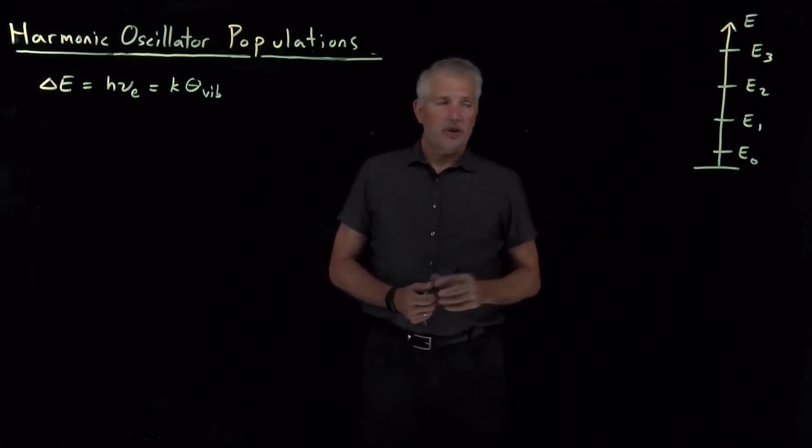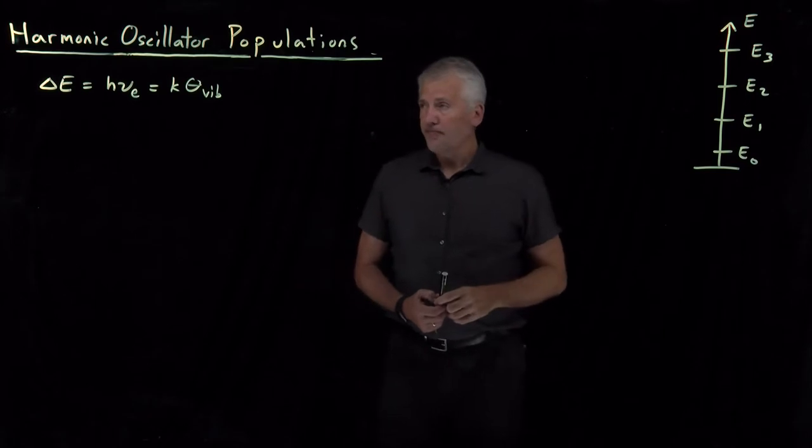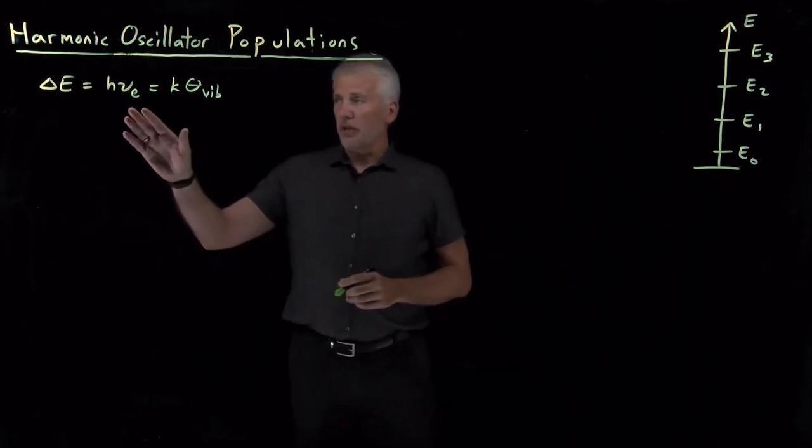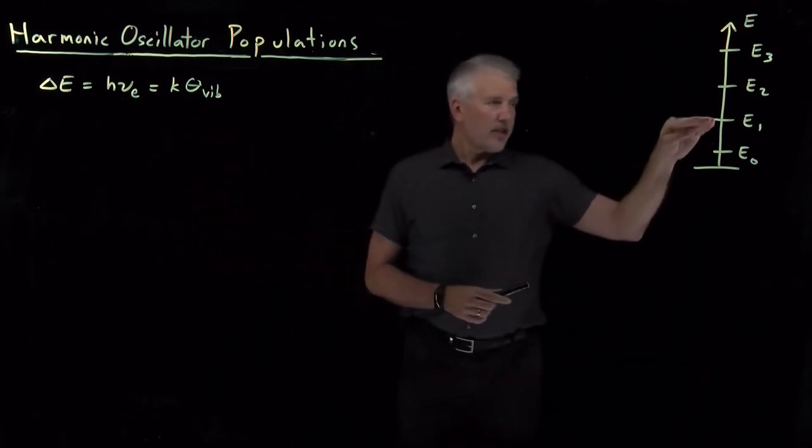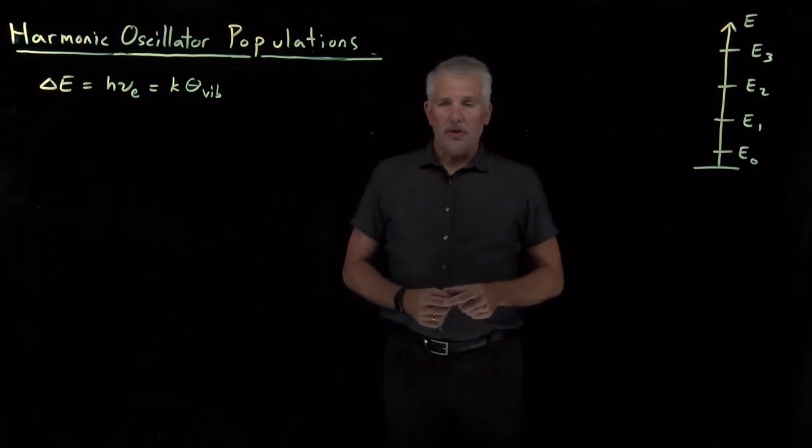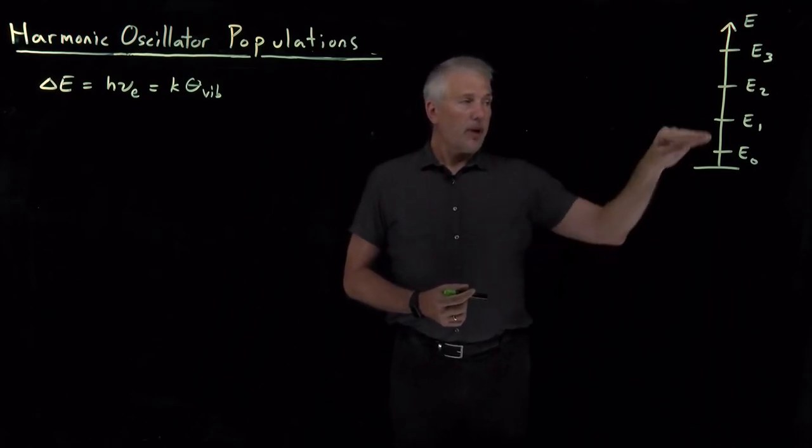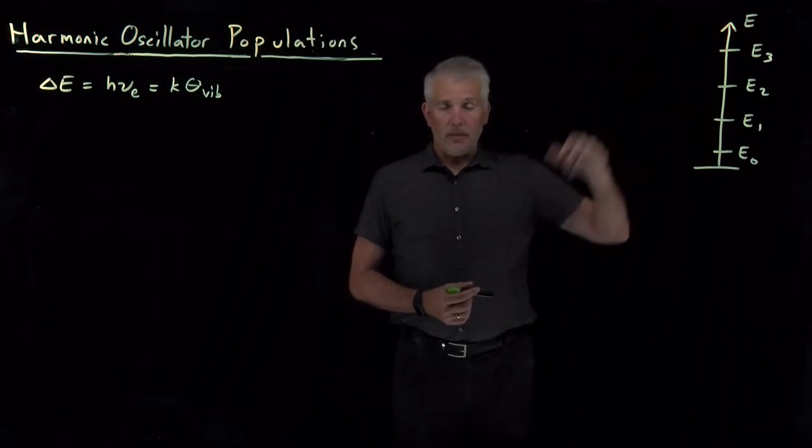So we can talk about which of these states are populated or not, which amounts to the question of whether the energies of these states are large or small compared to KT. Is there enough thermal energy at a particular temperature to populate a few or very many of these states?